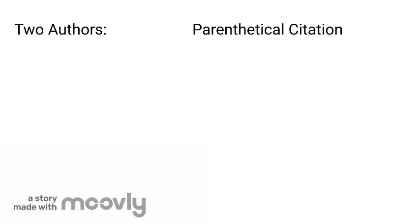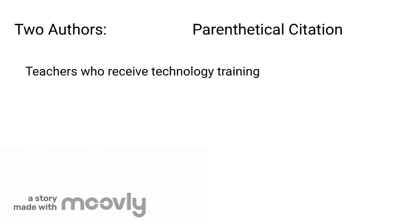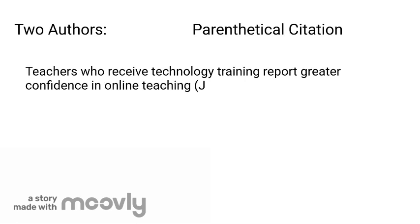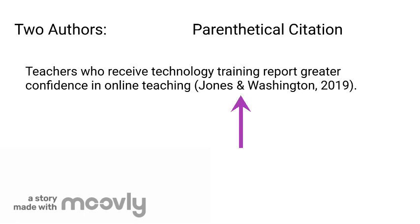Now let's look at sources written by two authors. For example: 'Teachers who receive technology training report greater confidence in online teaching (Jones & Washington, 2019).' The authors' names are separated with an ampersand and are followed by a comma and the year. The entire citation is in parentheses.